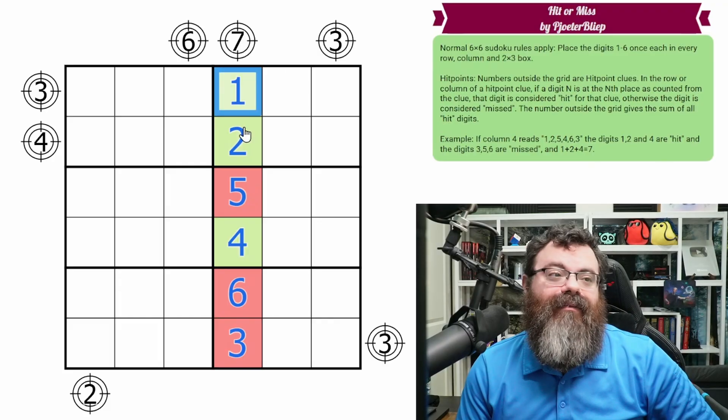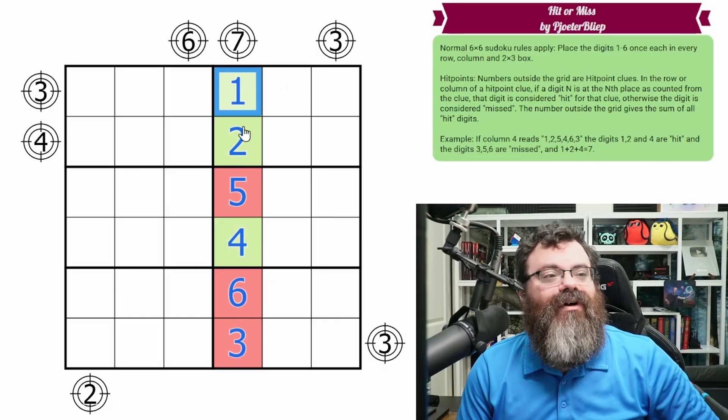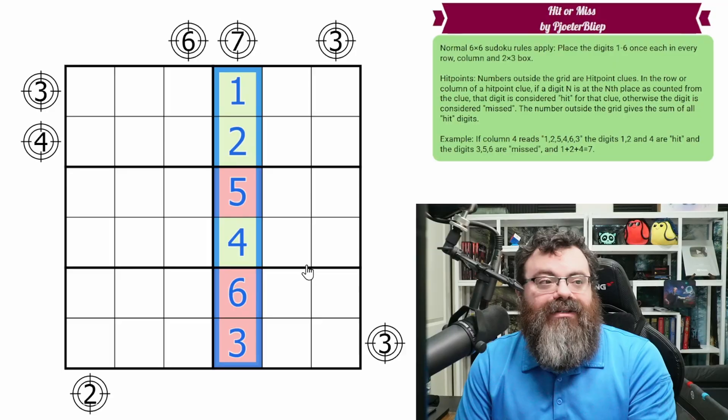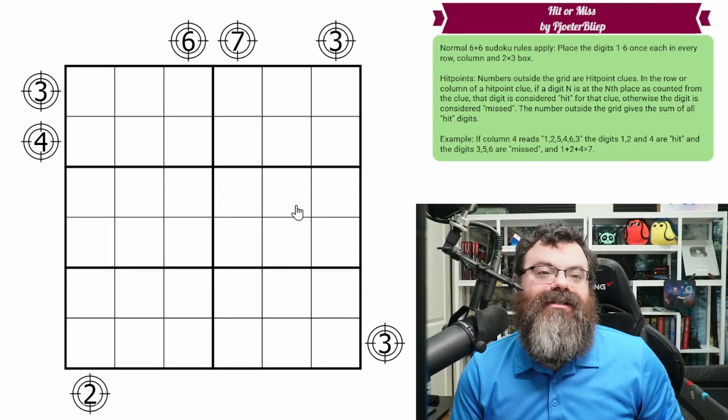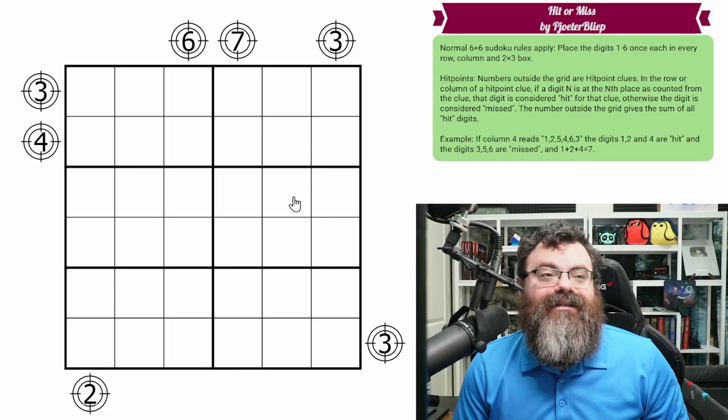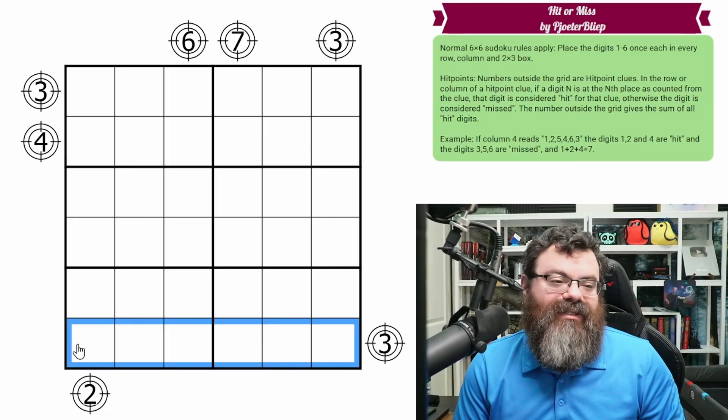And here, the seven is going to be the sum of the hit digits. So one plus two plus four is seven, that is our sum. So this would be a way to fulfill this column, but not the only way. Don't assume that's the solution. And that's it.